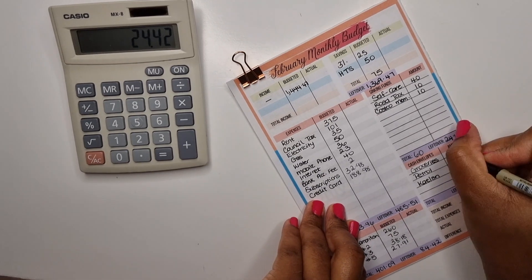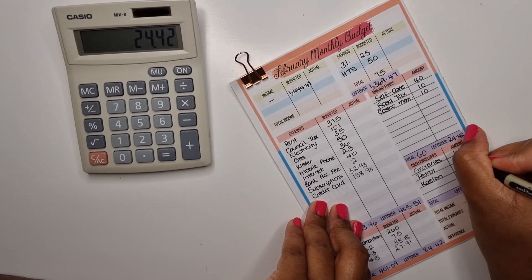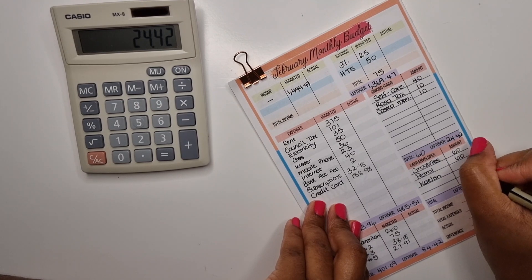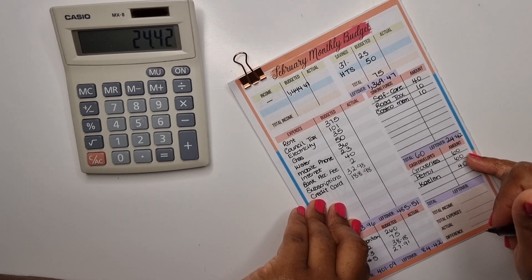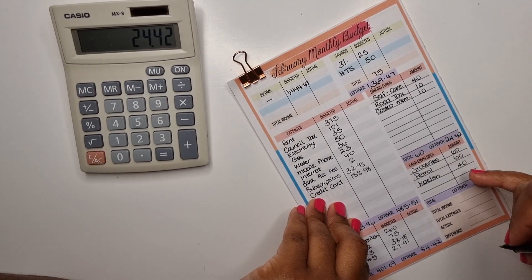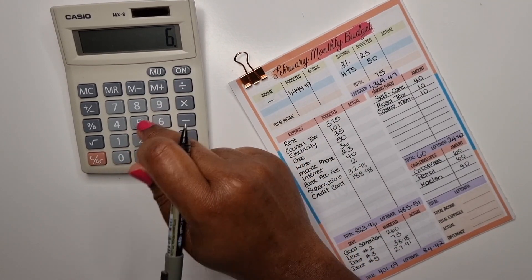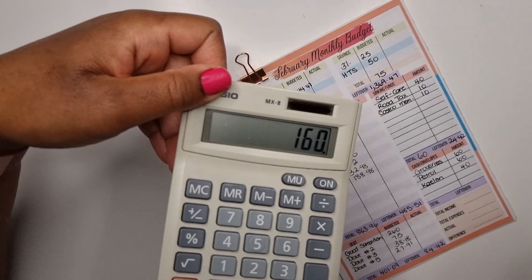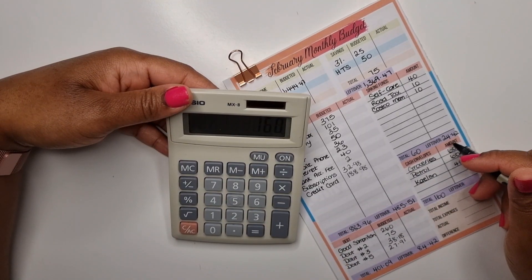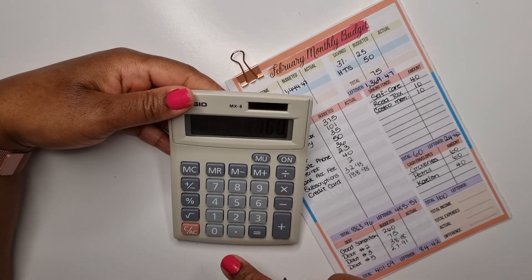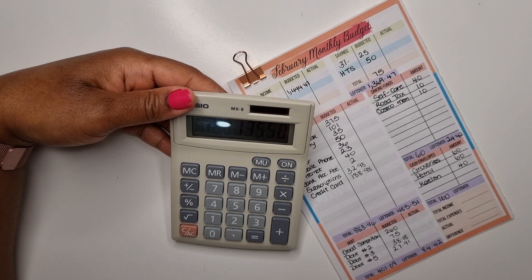For groceries we're budgeting sixty. We've decreased by forty quid. And petrol, we're budgeting sixty. This has been decreased by twenty quid. And Kalan, I'm budgeting forty, and this has been decreased by another twenty quid. So sixty and sixty is one twenty, plus forty is one sixty. We've got one sixty, and we're going to subtract that from the twenty-four forty-two, which gives us one thirty-five fifty-eight.